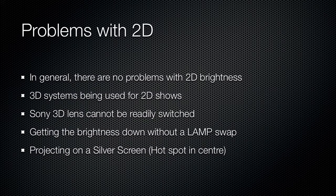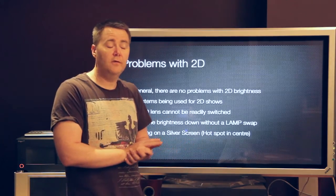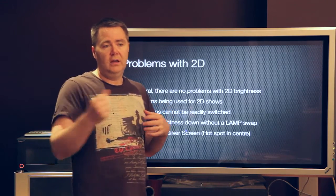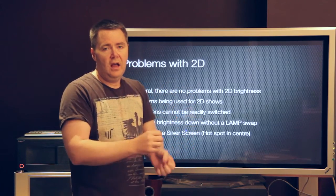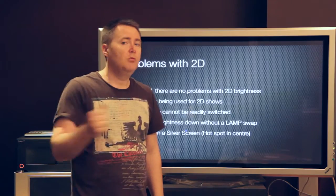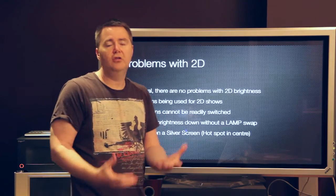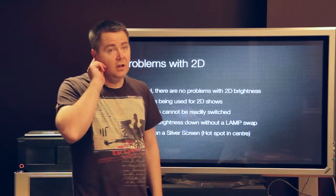There are problems in relation to 3D, because projecting 2D content on a 3D-designed system has inherent problems. For example, the high-gain silver screen affects your 2D performance. If you've got a RealD or any other active system in front of the lens and you're going to do a 2D display, it has to be removed somehow — and that's sometimes being neglected, with the image just being shone through the 3D system even on a 2D presentation. So that's quite a problem.